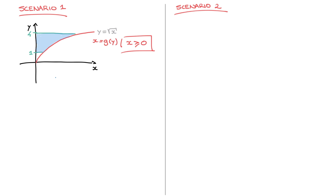We have y equals the square root of x. To make x the subject, the first thing we need to do is get rid of this square root. For that, I square both sides, leading us to y squared equals x — in other words, x equals y squared. We've now made x the subject. I'll label this as step one.